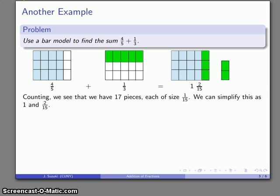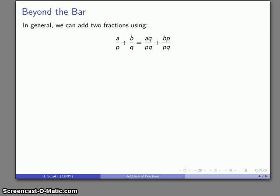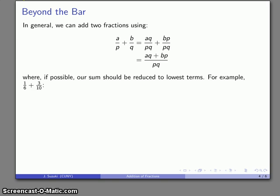Of course, at some point, we want to graduate to working with the concrete representation, to working with the abstract representation. So here's a convenient formula for adding two fractions, two fractions A over P plus B over Q. I can add them by multiplying AQ plus BP. Those will be our new numerators. Our common denominator will be P times Q, and where, if possible,